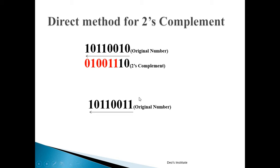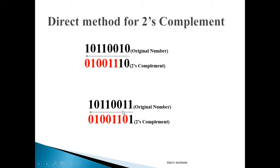One more example: consider this number. Scanning from LSB to MSB, the very first bit is already a 1, so we write that 1 as it is. After finding the 1, all remaining bits are reverted: this 1 changes to 0, this 0 changes to 1, and so on up to the last bit which changes to 0.